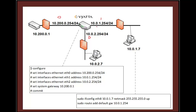The first thing we do is set up the three IP addresses of the interfaces. This one is on the 10.0.1.0 network, this is on the 10.0.2.0 network, and this is the 10.0.200.0 network. We'll give each interface an IP address.